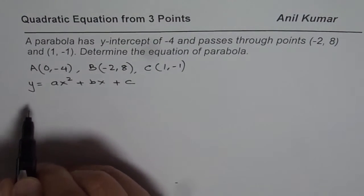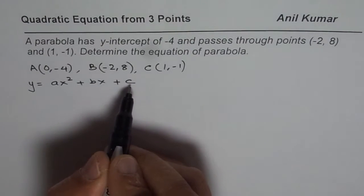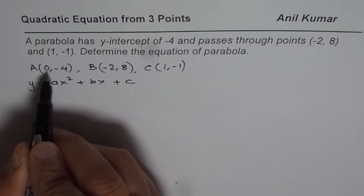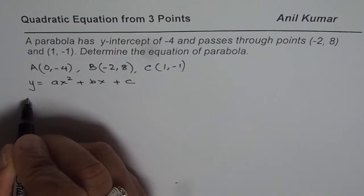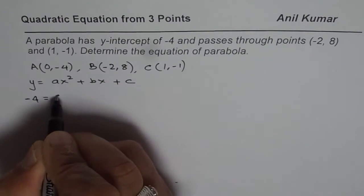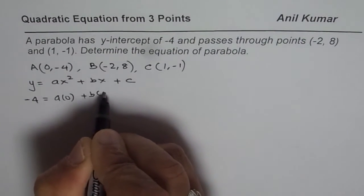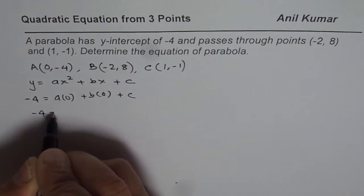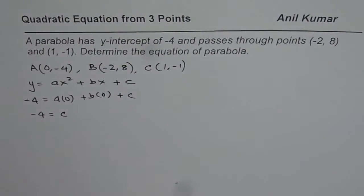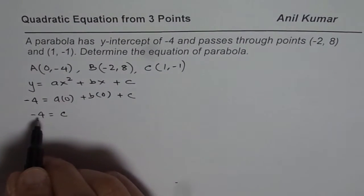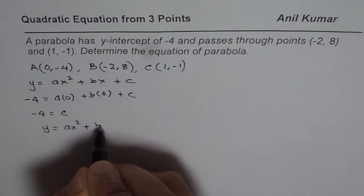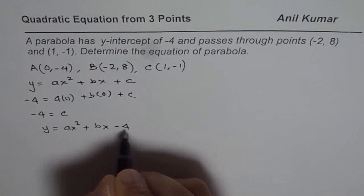Let's begin with the y-intercept. In this equation, C is the y-intercept. When I substitute x equals 0 and y equals minus 4, I get minus 4 equals A times 0 plus B times 0 plus C, which gives us minus 4 equals C. So C is indeed the y-intercept. We can rewrite the equation as y equals Ax squared plus Bx minus 4.